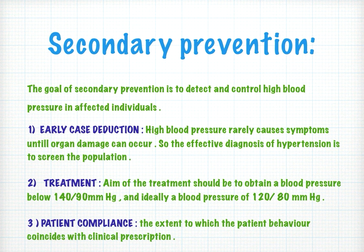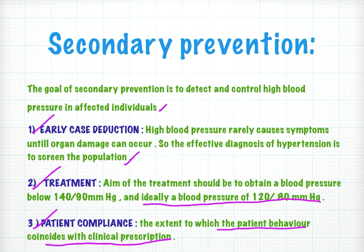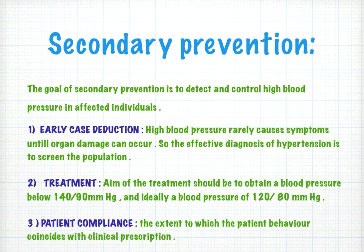Secondary prevention of hypertension aims to detect and control high blood pressure in affected individuals. There are three strategies: early case detection through population screening, treatment — where the goal is to bring BP below 120/80 mmHg — and patient compliance, defined as the extent to which the patient's behavior coincides with clinical prescription. All three are included under secondary prevention.